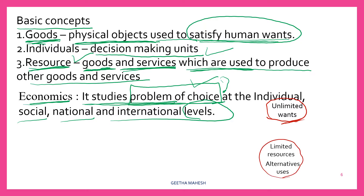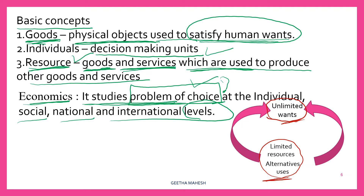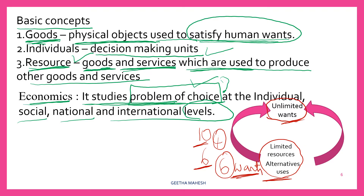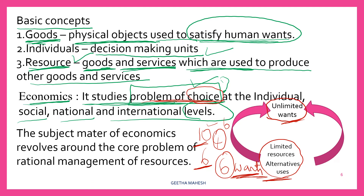The resources are not only limited, but they have alternative uses. When you are trying to satisfy your unlimited wants with the limited resources, you have to make a choice. For example, you have 10 wants but you have resources to satisfy only 6 wants. You have to choose 6 wants and remove 4 from your list. Making a choice to satisfy unlimited wants with limited resources — we call it the problem of choice. The subject matter of economics revolves around the core problem of rational management of resources.